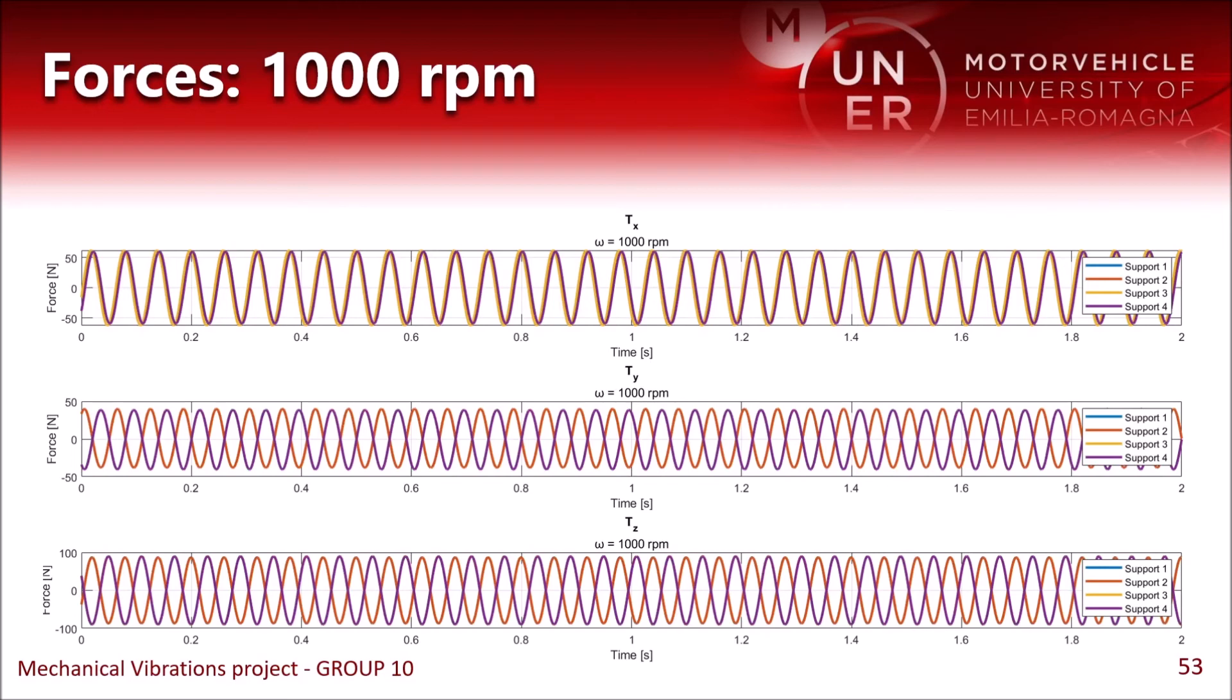If we move to 1000 rpm, we have lower forces in all the directions, so this speed can be a possible idle engine speed.